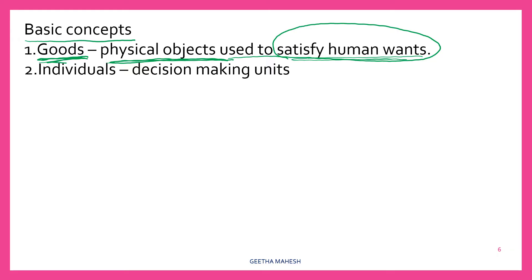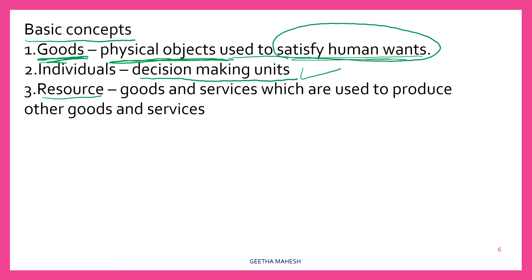Then, individuals — who are individuals in economics? Individuals means individual decision-making units. The decision-making units can be a single person or a group like a household, a firm, or any other organization. Next one is resources. In economics, resources means goods or services — goods and services which are used to produce other goods and services. Examples: land, labor, tools, machinery are good examples for resources.